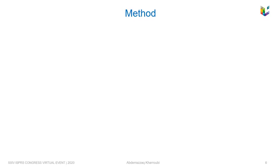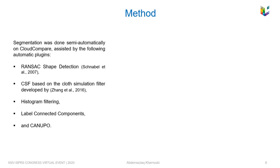Segmentation was done semi-automatically in CloudCompare, assisted by the following automatic plugins: RANSAC shape detection, CSF based on the cloth simulation filter, histogram filtering, and label connected component.